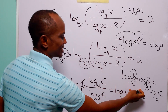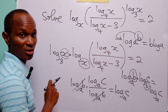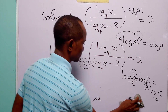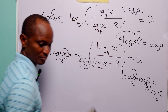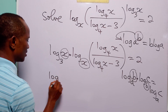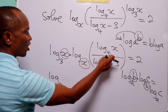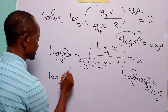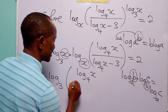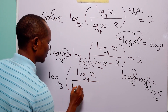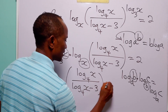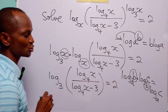So, in essence, when we apply this rule to the equation, what we have is log to base 3 of log to base 4 of x divided by log to base 4 of x minus 3, and this is equal to 2.